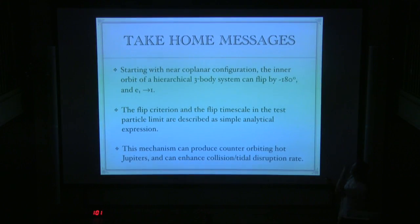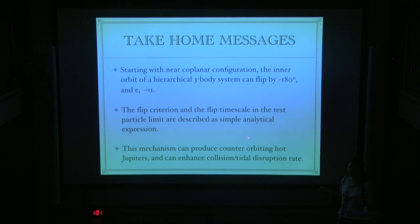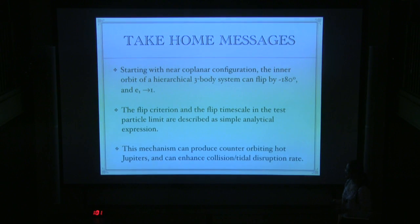In summary: starting with an almost coplanar configuration, the inner orbit can flip by about 180 degrees and eccentricity can be excited. For this coplanar flip, we can get analytical expressions for the flip criterion and flip timescale that agree well with numerical results. This mechanism can produce counter-orbiting planets, and can enhance collision rates and tidal disruption rates.